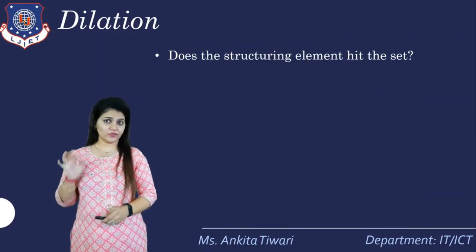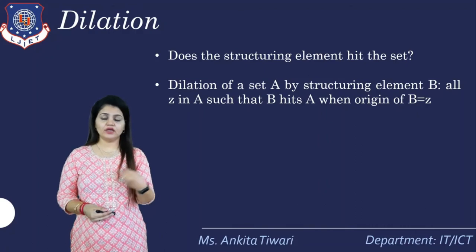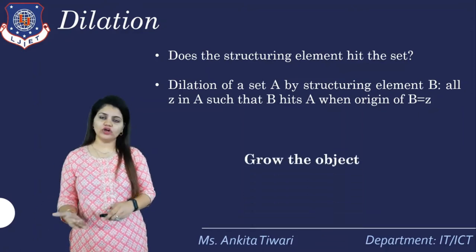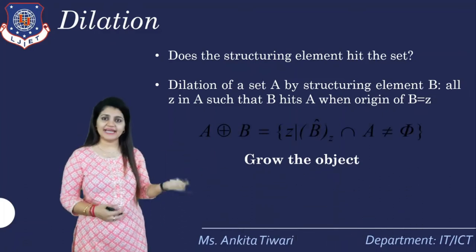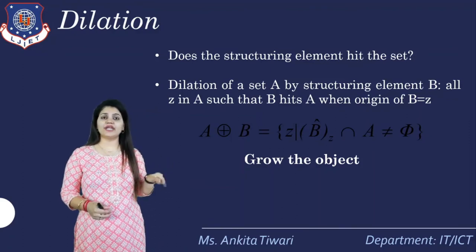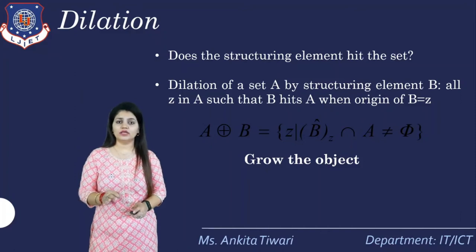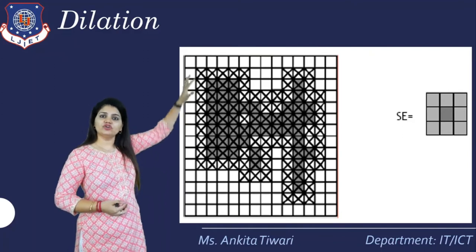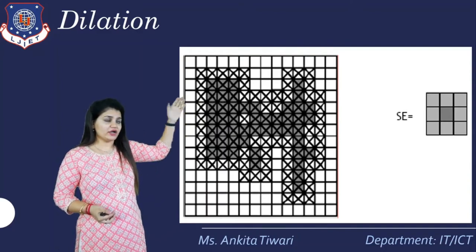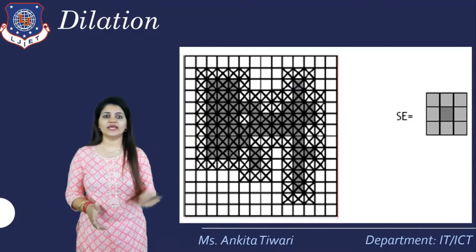For dilation, the question is: does the structuring element hit the set? The dilation of set A by structuring element B is all z such that B hits A when the origin of B equals z. It grows the object. The symbolic notation shows z with the property of B intersecting A, where the intersection is not equal to the empty set. As shown in the diagram, all neighboring pixel locations are included when growing.